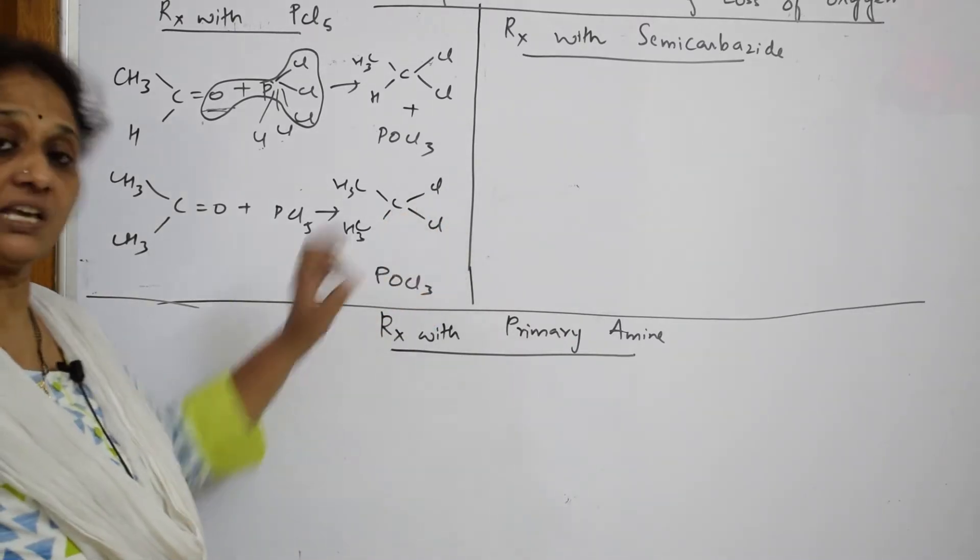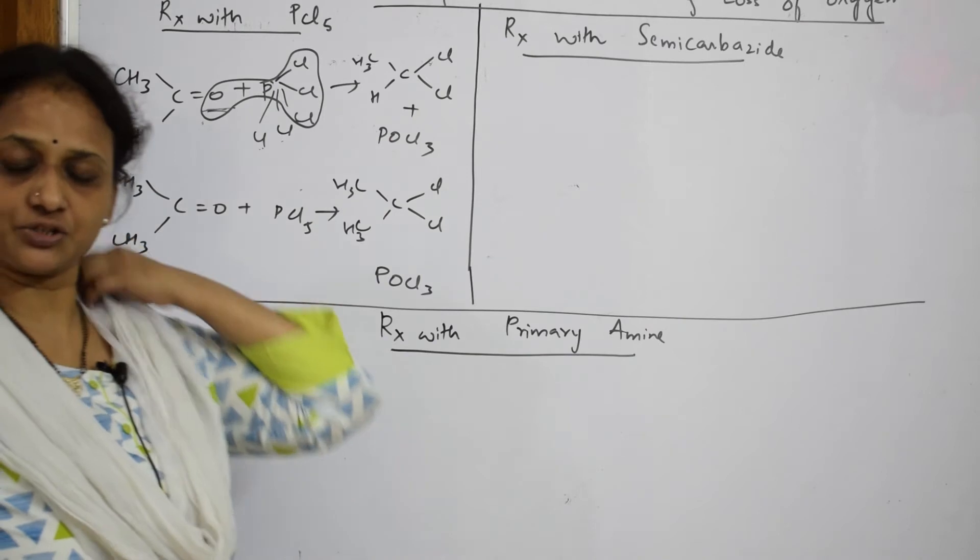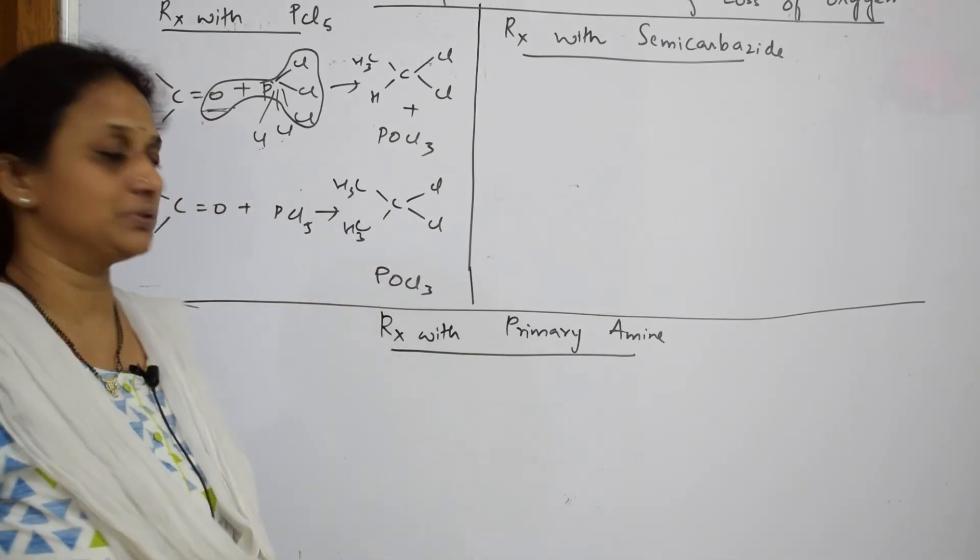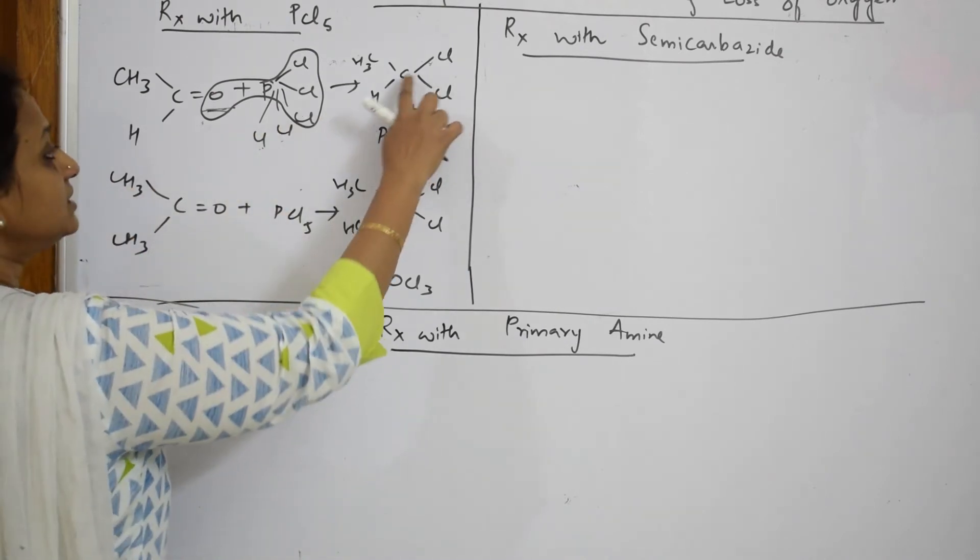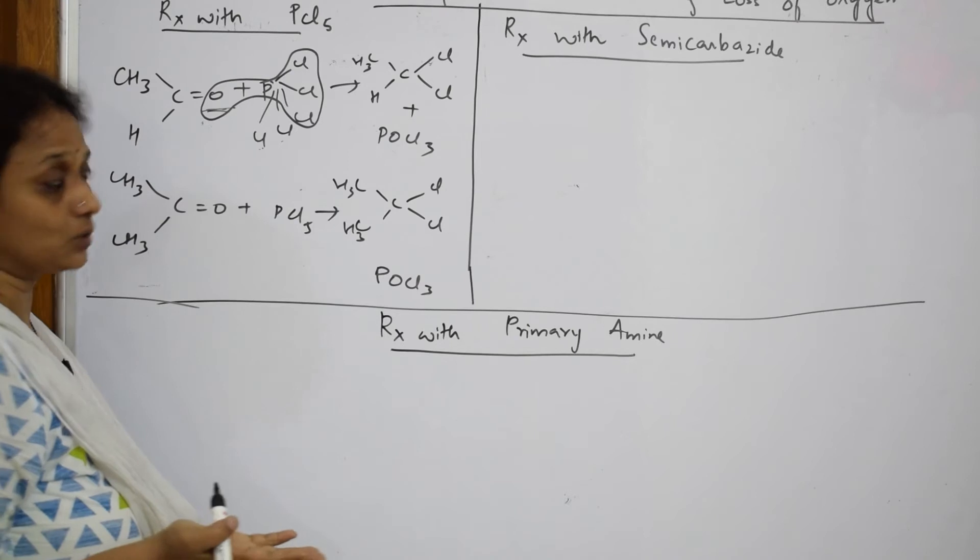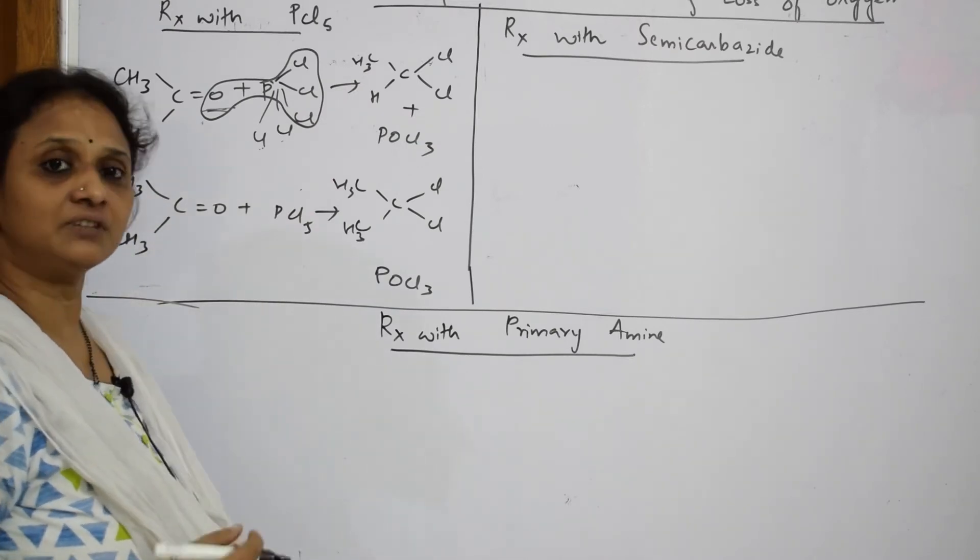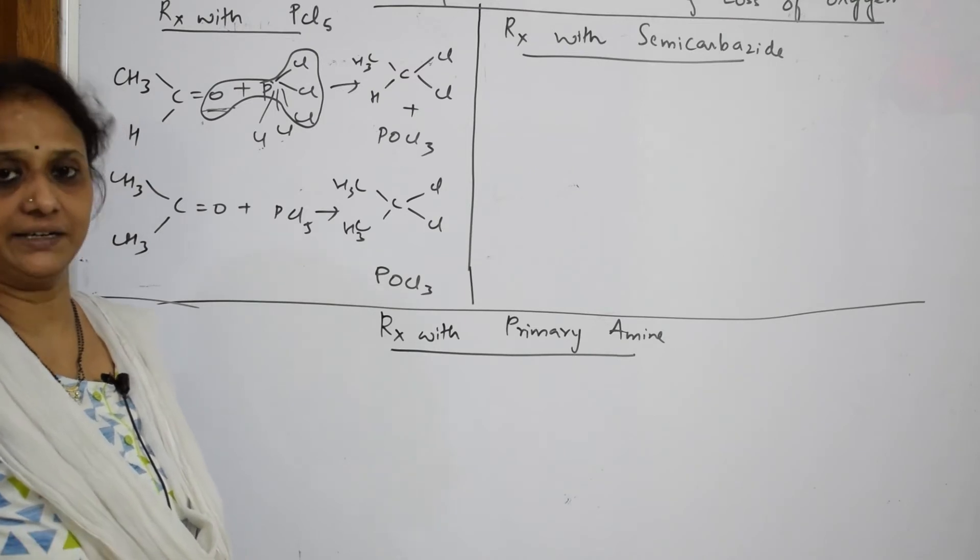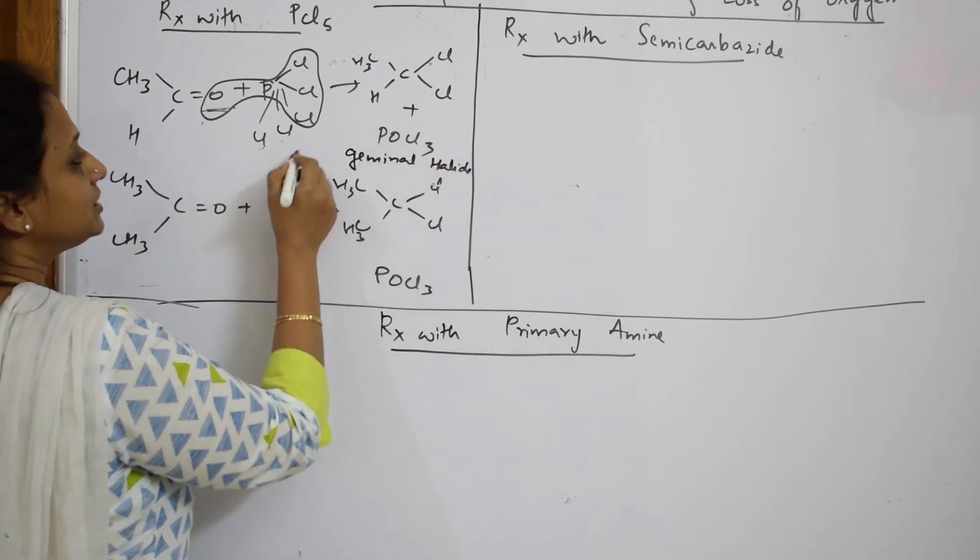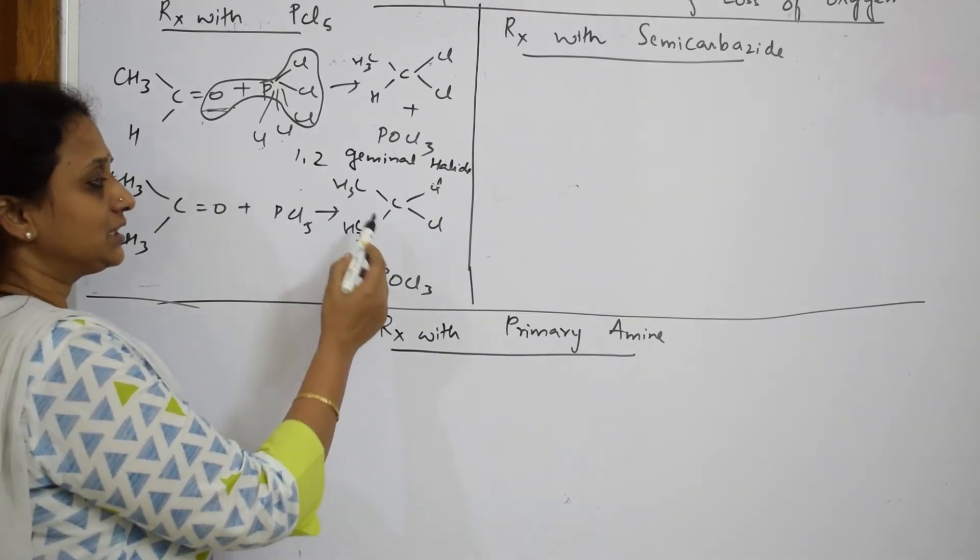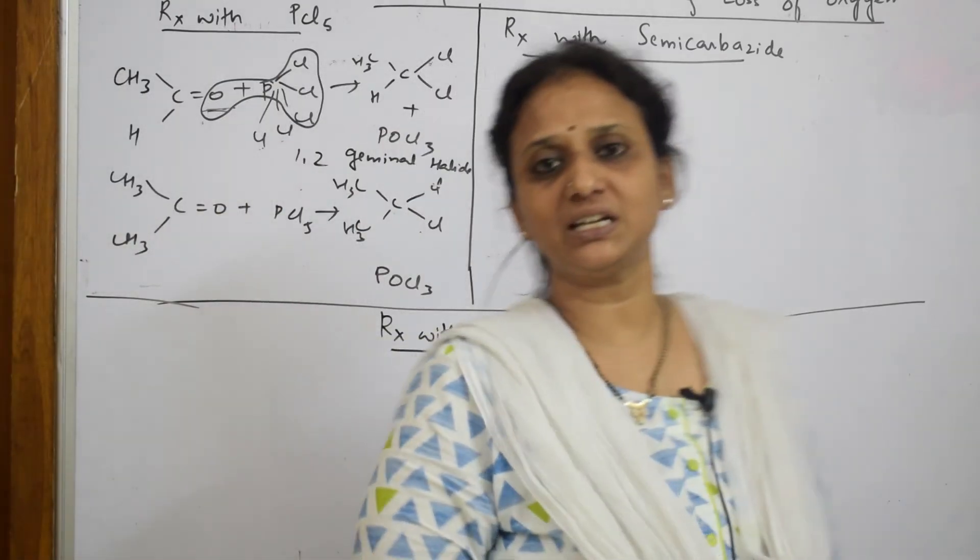Now, these chlorines are attached to the same carbon. That is why they are called geminal halides. If the halogen is attached to the same carbon, it is called geminal. If it is attached to two carbons, one here and another here, then it is called vicinal halides. They are called gem halides. It is attached to the same carbon, 1,2-dichloro. It is derived from ethanal. So you can write it as 1,2-dichloroethanal or geminal halide.